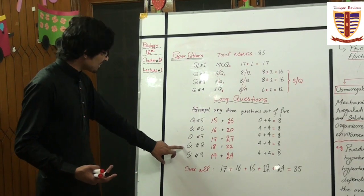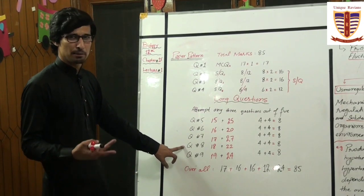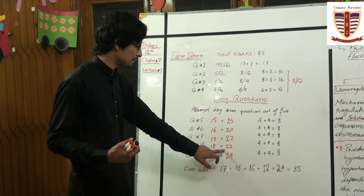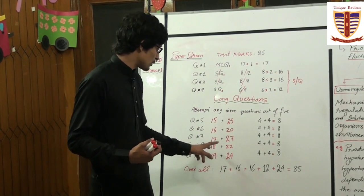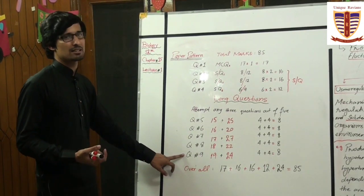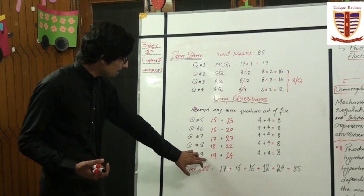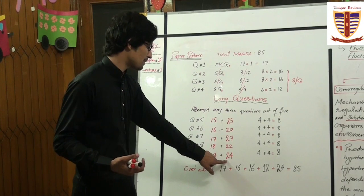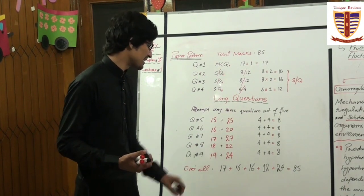Then Question No. 8 has two parts: the first part is from Chapter No. 18 and the second part is from Chapter No. 22, making 4 plus 4 equal to 8. Then Question No. 9 also has two parts: the first part is from Chapter No. 19 and the second part is from Chapter No. 24.